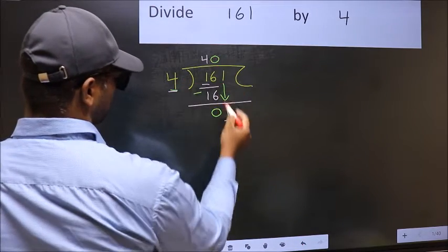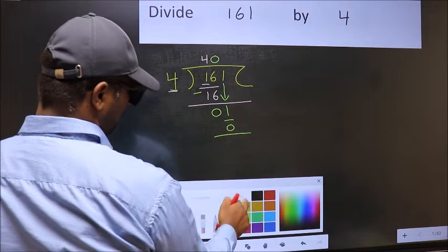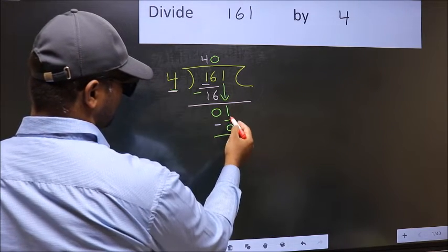So 4 times 0 is 0. Now you should subtract. 1 minus 0 is 1.